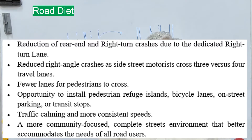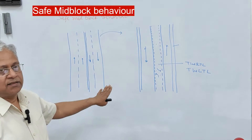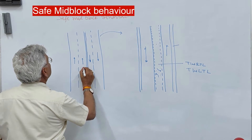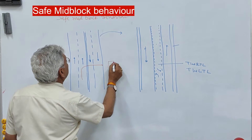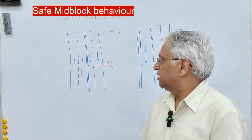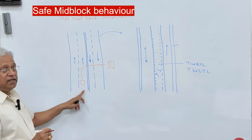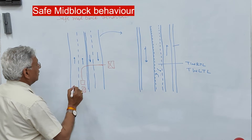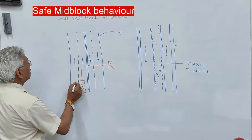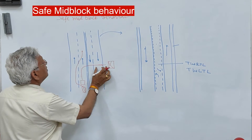I will discuss three or four of these advantages. The first is that it creates safe mid-block behavior. Consider this case: a right-turning vehicle is required to cross two lanes to reach an establishment. When it makes a right turn, it slows down from a distance, delaying the following vehicle. When this following vehicle is delayed, it creates an unsafe maneuver, and then it must cross two lanes whenever a gap occurs.